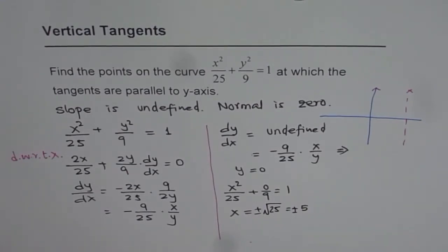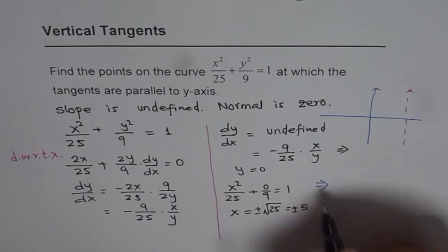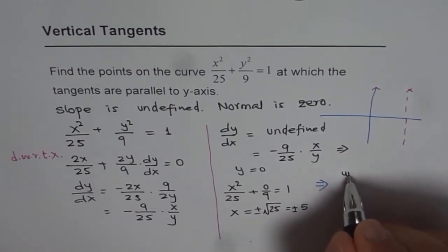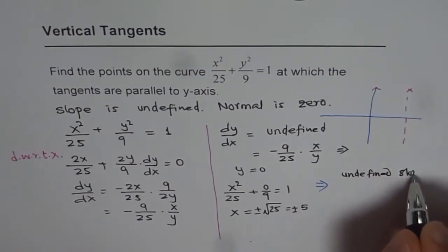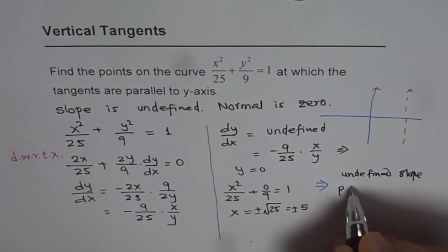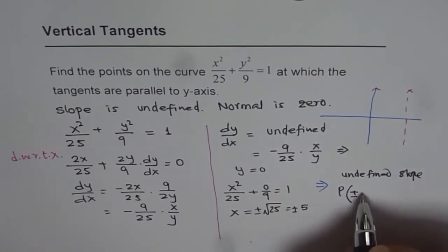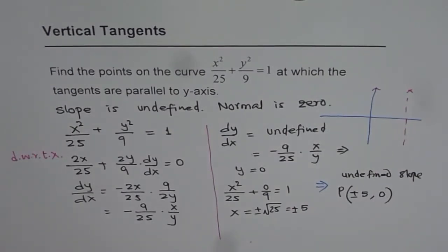So that gives us the point, undefined slope at point P which is plus minus 5. So there are two points and the y value is 0. So it is basically the x intercept. So that is our solution.